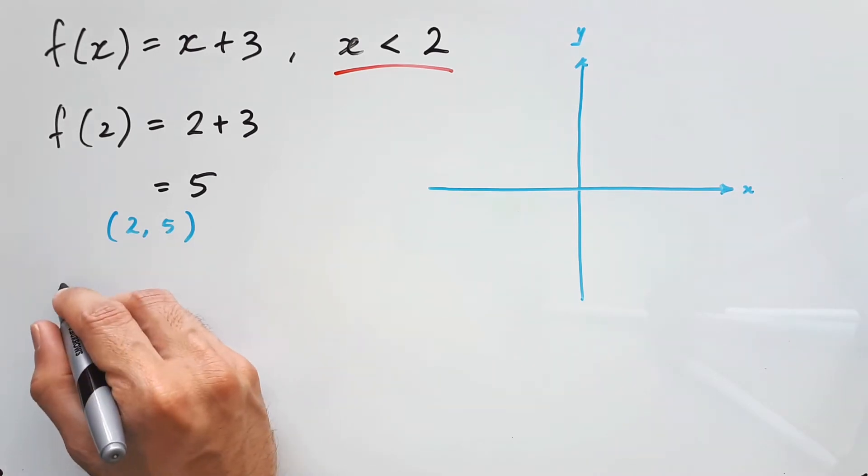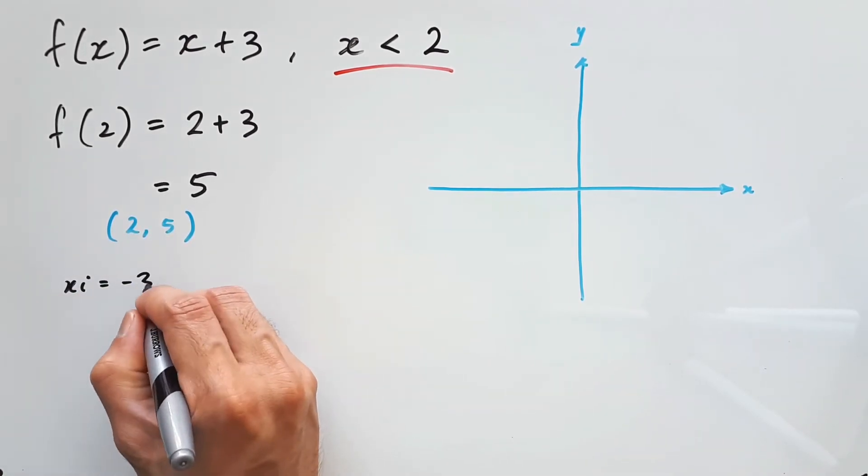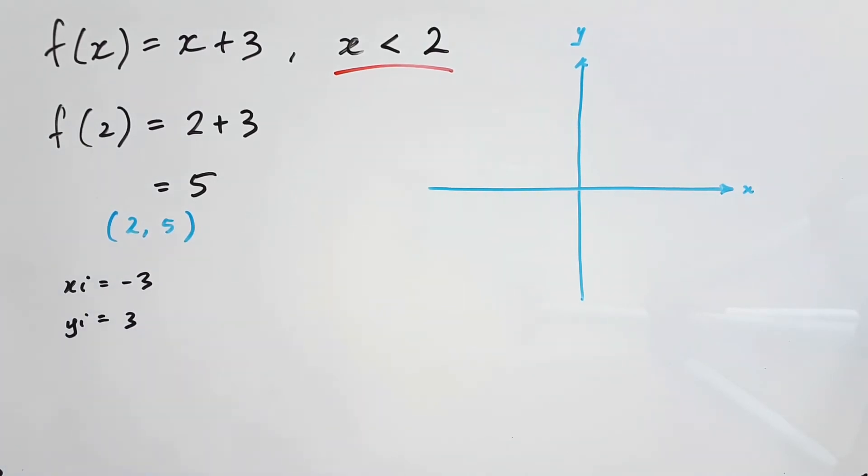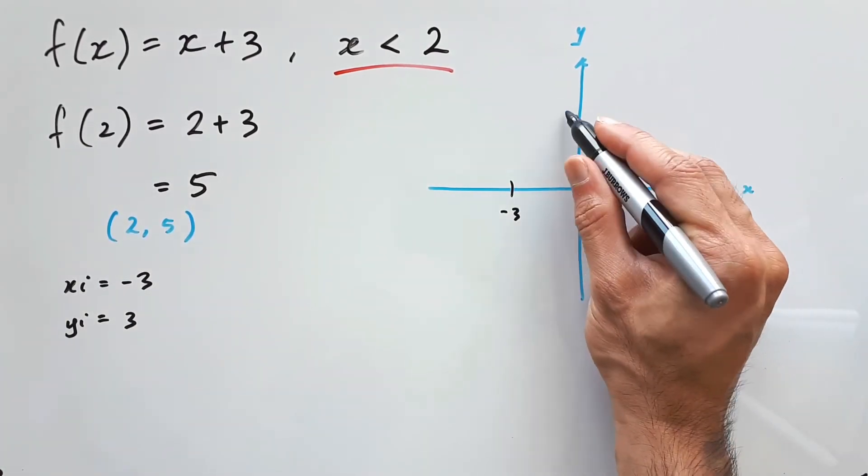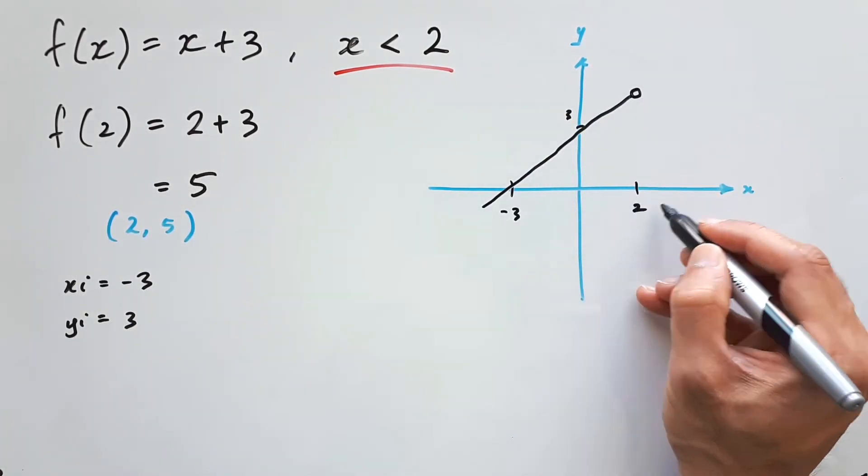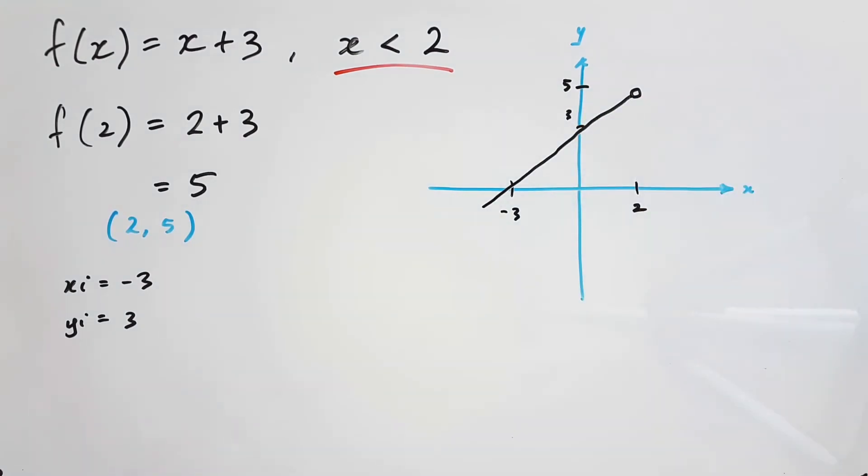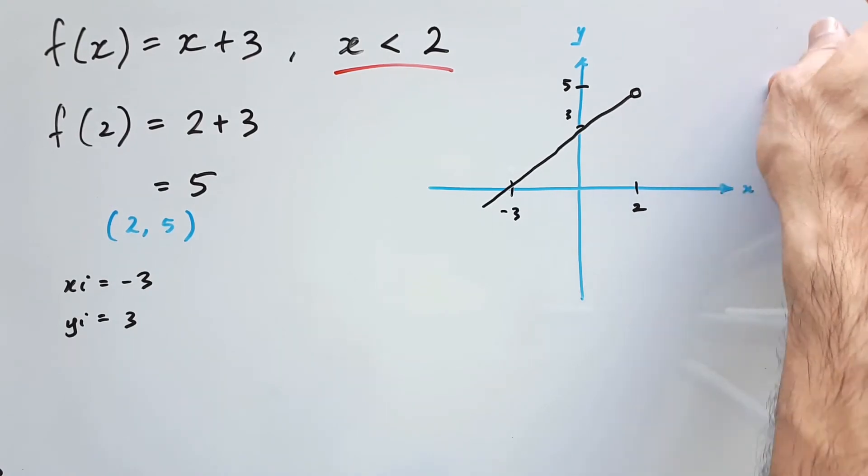Using a brief analysis, we can also see that the x intercept would be negative 3, and the y intercept would be 3. So when we draw this straight line through, it seems to stop at x equal to 2, and doesn't go any further than that. If we were just using the natural limits of x plus 3, we would expect this line to just go straight through from negative infinity all the way to positive infinity. But because of that limit, x less than 2, we have to stop the graph at 2.